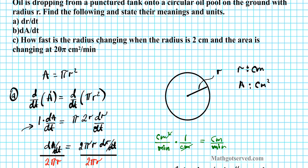Now let's take a look at part c. It says how fast is the radius changing when the radius is 2 centimeters and the area is changing at 20 pi centimeters squared per minute. So radius changing, what is that? That's the instantaneous rate of change of the radius. dr/dt is what we're looking for.